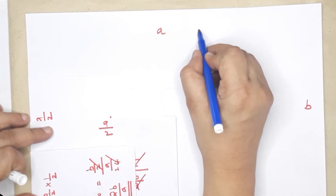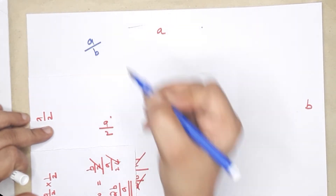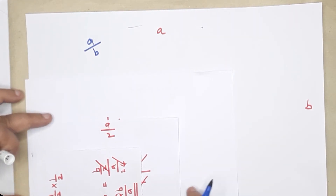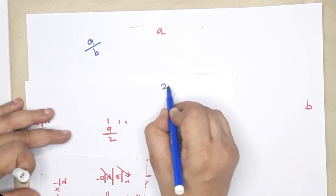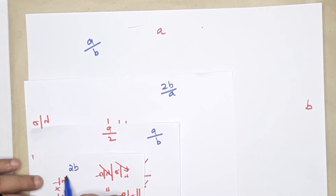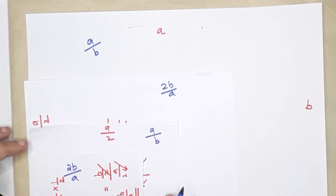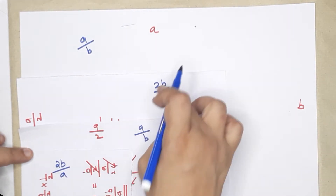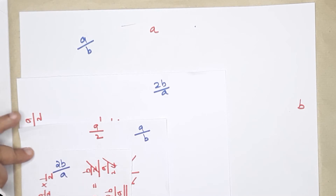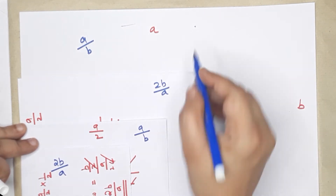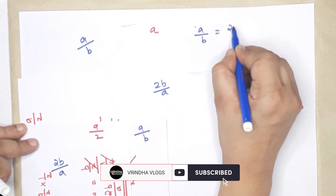What is the value of this ratio? This is the length. The ratio is a by b. What is the value of this ratio? Ratio is equal to 2B by A. What is this ratio? A by B. What is this ratio? 2B by A. The two ratios are equal. We have A by B equals 2B by A.